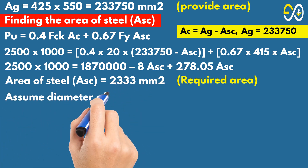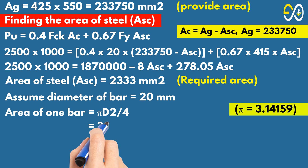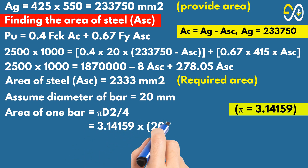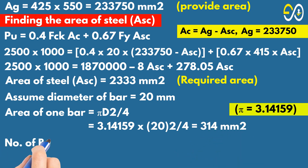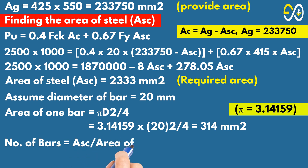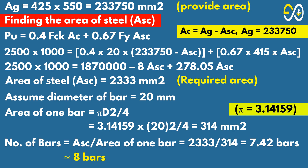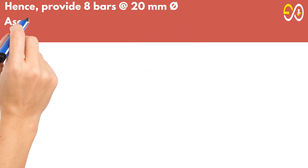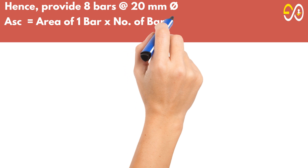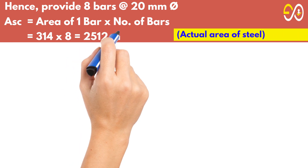Assume diameter of bar equals 20 millimeters. Area of 1 bar equals pi D squared over 4 equals 3.14159 times 20 squared over 4 equals 314 square millimeters. Number of bars equals Asc over area of 1 bar equals 2,333 upon 314 equals 7.42 bars, approximately 8 bars. Hence, provide 8 bars of 20 mm diameter. Area of steel equals 314 times 8 equals 2,512 square millimeters.